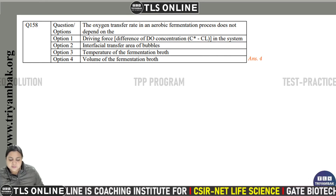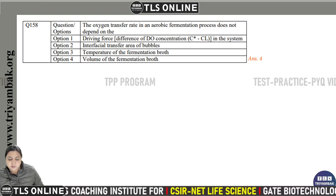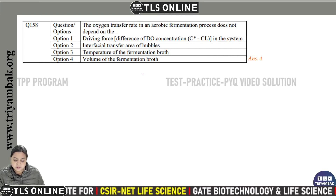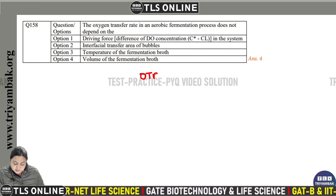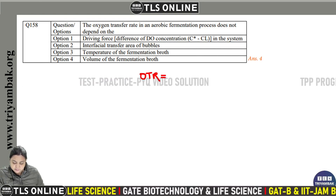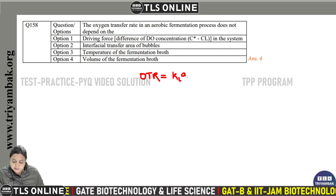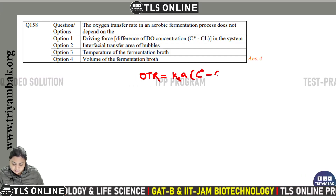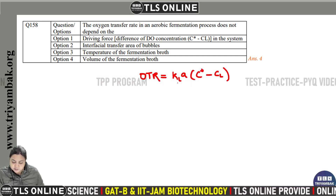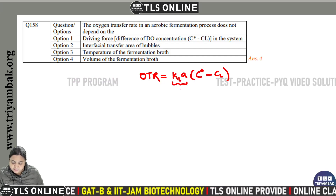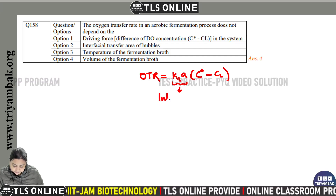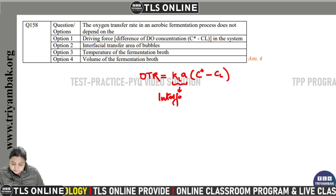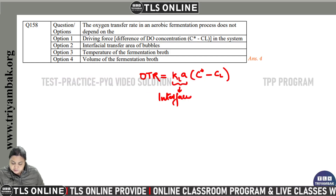The oxygen transfer rate in an aerobic fermentation process — OTR — is given by KLA × (C* - CL), where KLA represents the interfacial area.